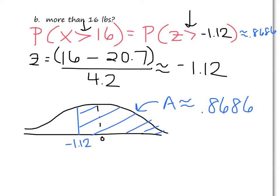That's the probability of getting, picking a person, or this is really the percent of people, so that means it's about 86.86% of people would eat more than 16, which makes sense because the average is 20.7. So we would expect more than 50% of people to eat more than 16 pounds of ice cream.